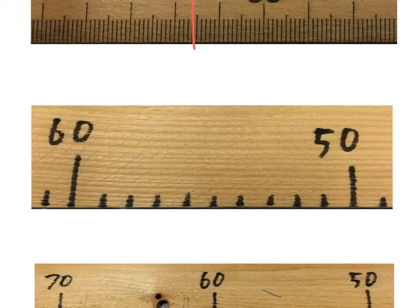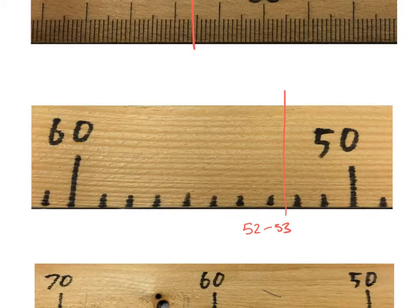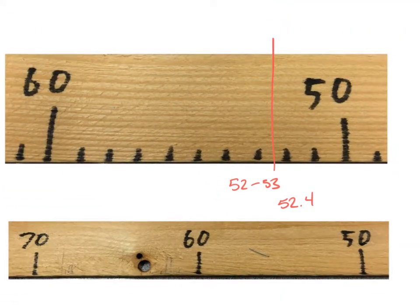Now this next ruler has lines every centimeter instead of every tenth of a centimeter. Counting from the right: 50, 51, 52, 53 — so this line is between 52 and 53. This is a less precise instrument, but it's the one in front of me, so I have to use it. I'm not going to report to two past the decimal because I don't know where the tenth of a centimeter is. I know where each centimeter is, so I report this answer to one past the decimal. It's not quite to the halfway point, so I call it 52.4. You gauge how far between the lines it is and report a number that seems to make sense.